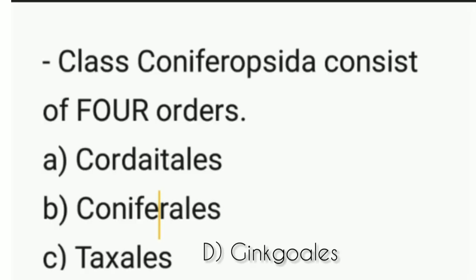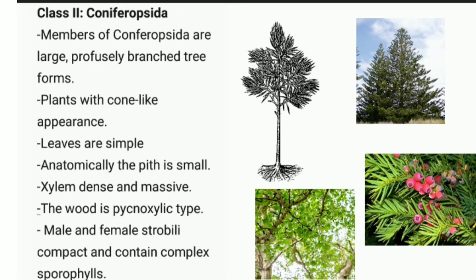Class Coniferopsida also consists of four orders: Cordaitales, Coniferales, Taxales, and Ginkgoales. Members of Coniferopsida are large, profusely branched tree forms with a cone-like appearance and simple leaves. Anatomically, the pith is small, and the xylem is dense and massive. The wood is pycnoxylic type, meaning less parenchyma is present — the opposite of manoxylic. Male and female strobili are compact and contain complex sporophylls.